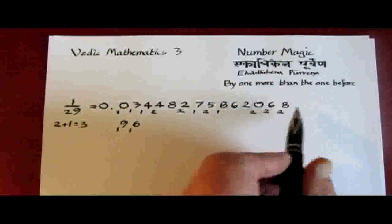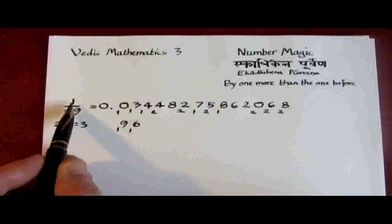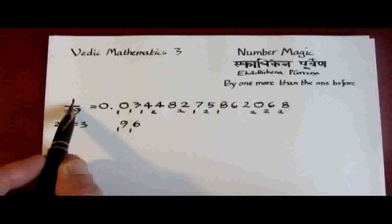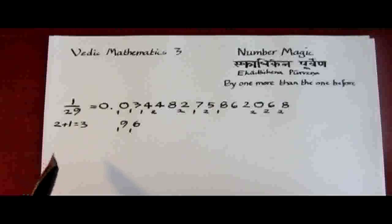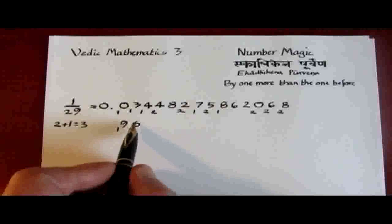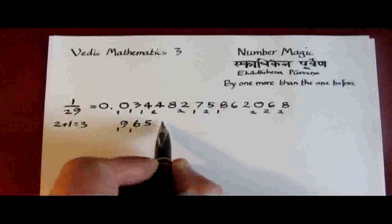The halfway stage is also where we get the difference between the denominator and the numerator. 29 take away 1 is 28. And that also gives us an indication of the halfway stage. Well, we can stop the division there because we can now just write down the complements.